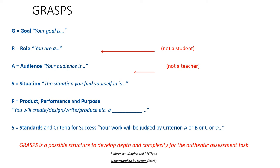I'll give you an example of this GRASPS activity using a history unit on Nazi Germany that I did with my Grade 10 students. Basically, you give a goal that meets the objective of the lesson or unit. You ask students to be somebody — not a student, but someone who is part of that topic. They have an audience, a context or situation, and they create a product or performance. Then you provide standards — some objectives — to assess.